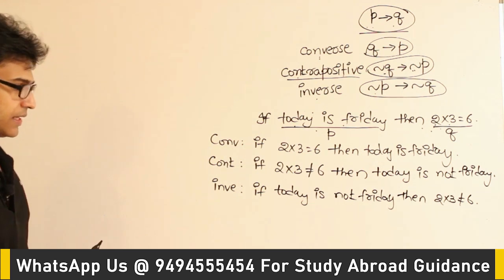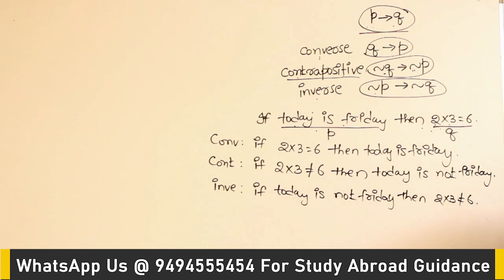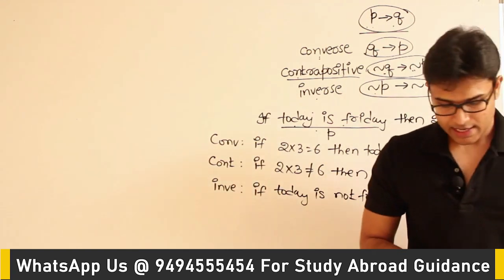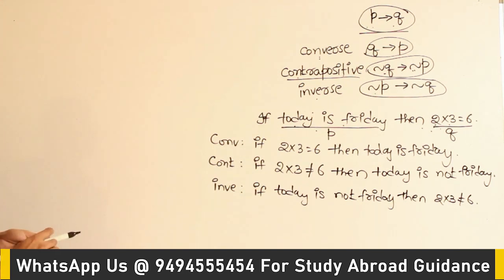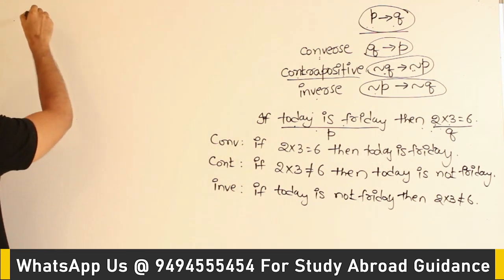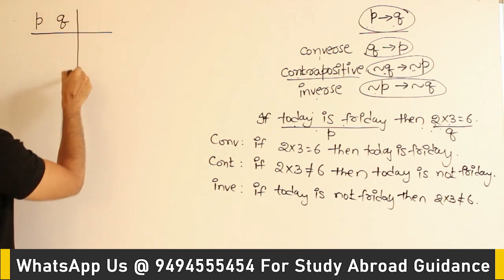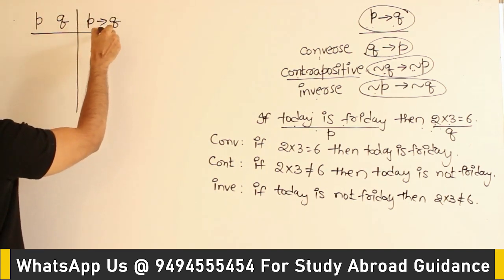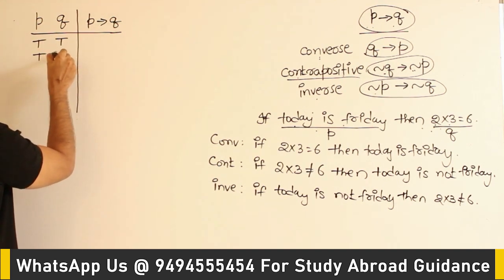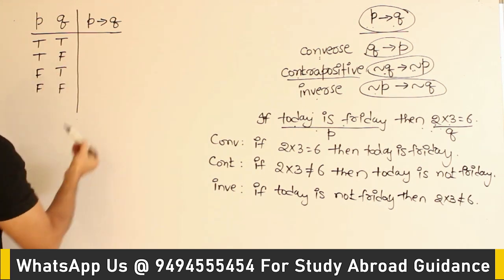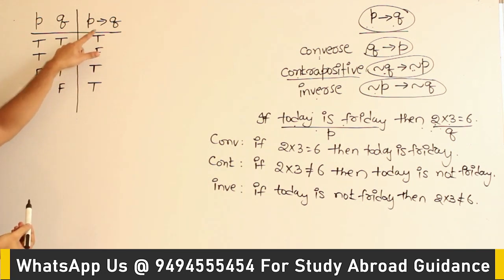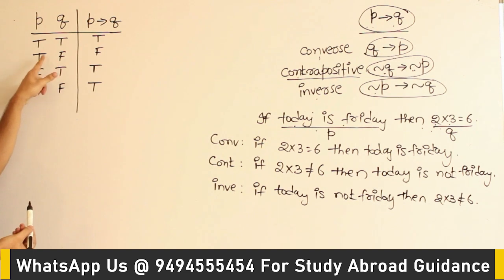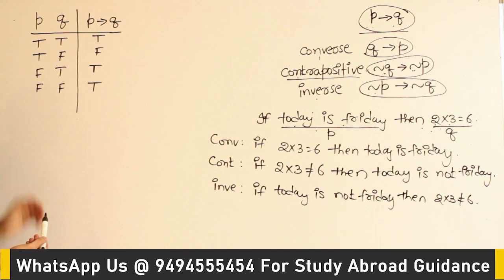There is also a concept called equivalence. Two statements are said to be equivalent if they have the same truth values. Since we are talking about implication, let's take the example of implication and see what equivalence means. This is the truth table for P implies Q — the only reason it might be false is whenever P is true and Q is false.